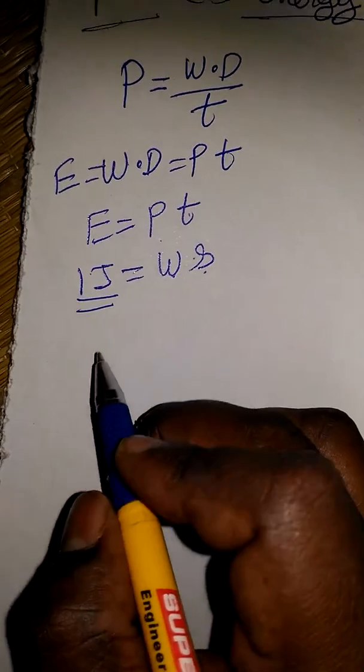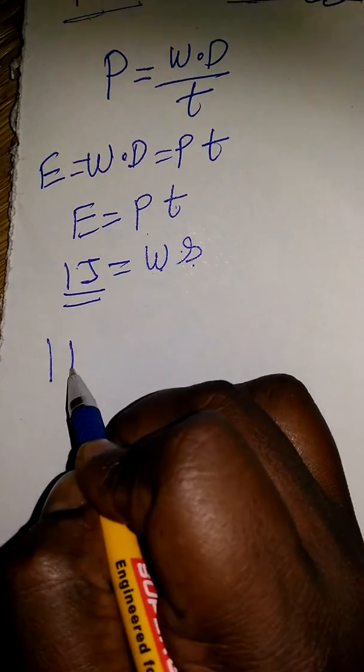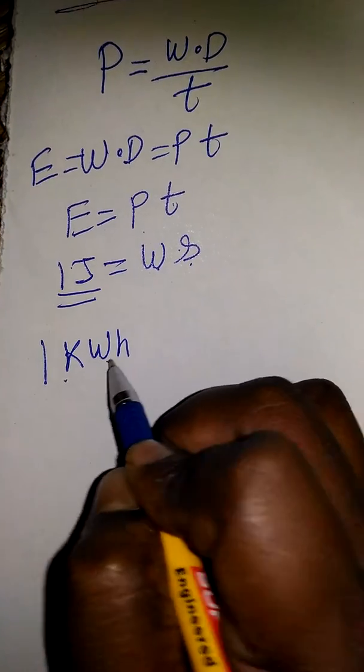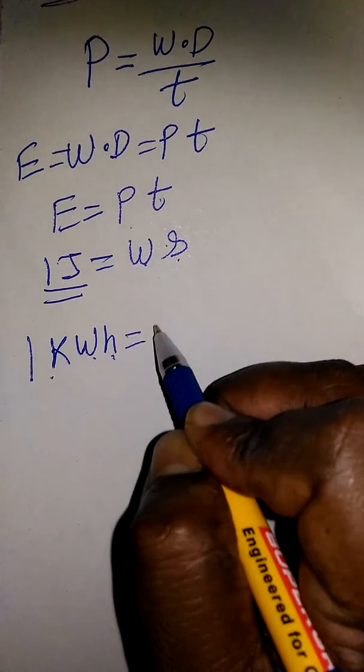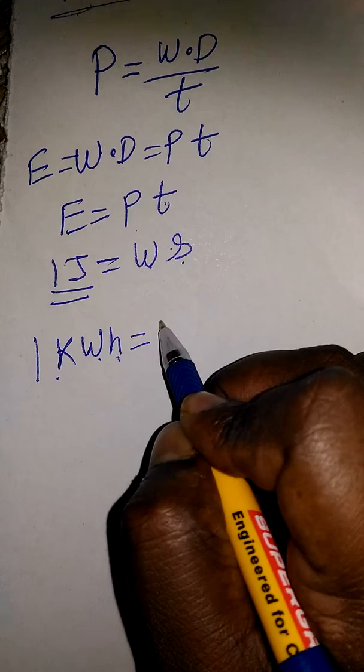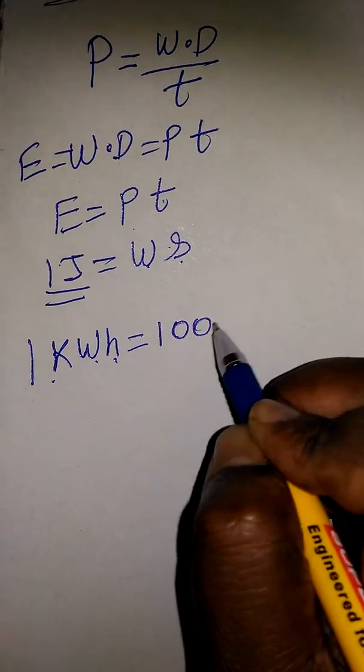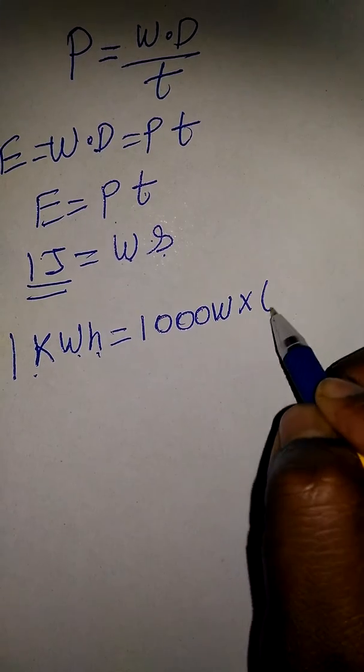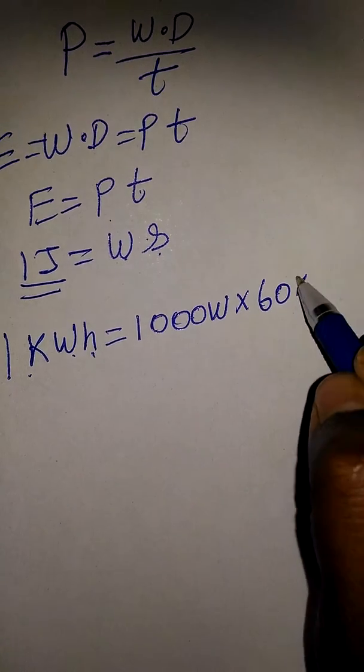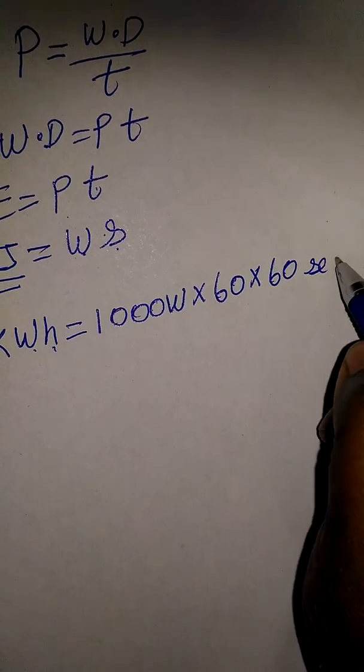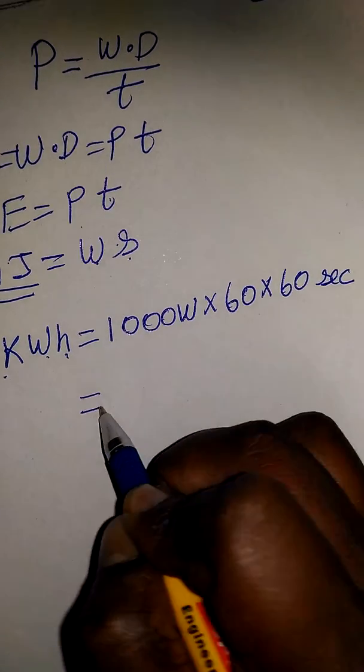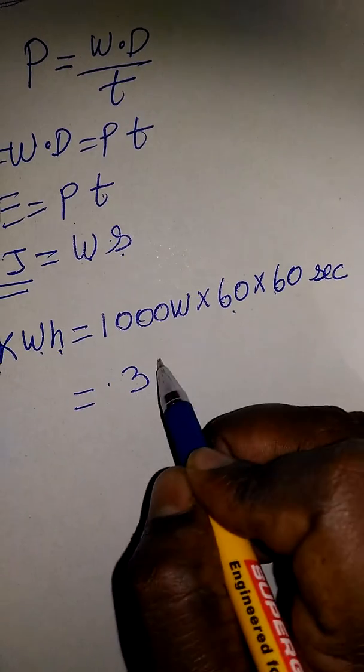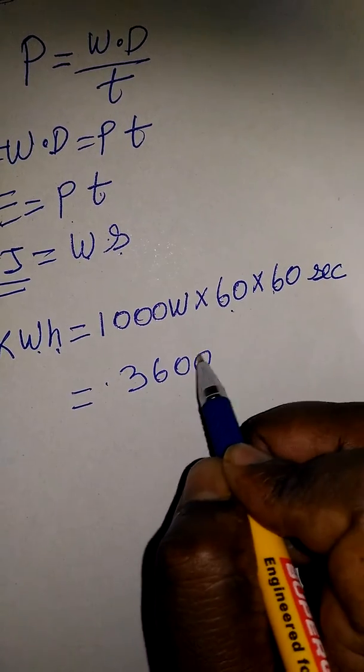So here I am going to see 1 kWh, that means kilowatt-hour. One kilowatt is one thousand watts. One hour is 60 into 60 seconds, so we come to know it's 60 into 60, that's 3,600.